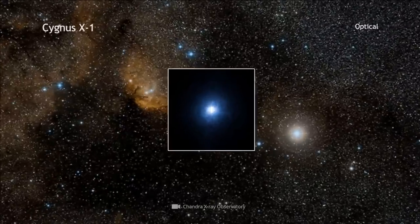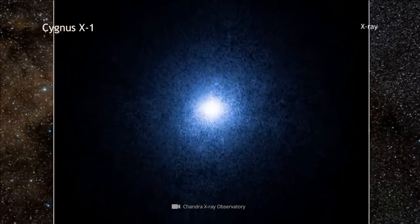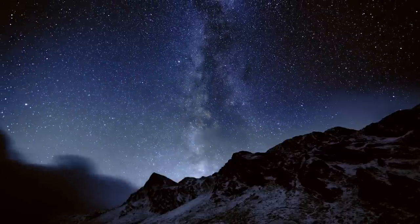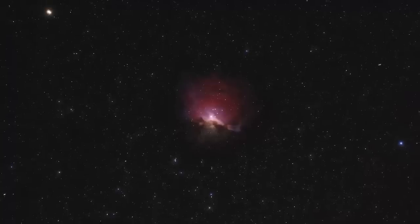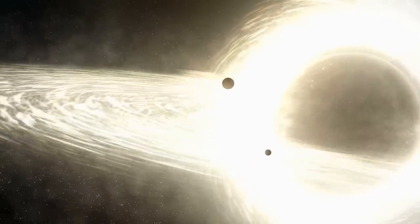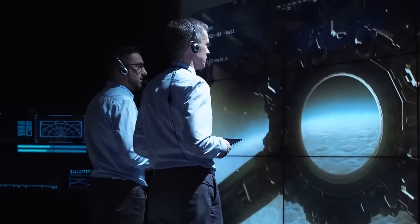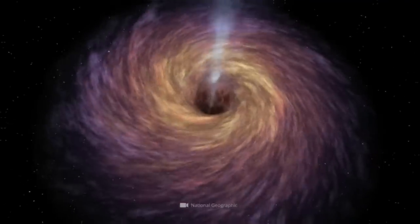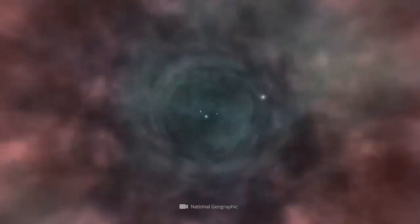The first black hole ever discovered is called Cygnus X-1 and is located 6,000 to 7,000 light years away in the constellation of Swan. In this video, you will learn what this black hole is all about and why researchers recently had to throw everything they thought they knew about this black hole out the window.